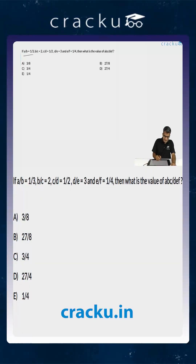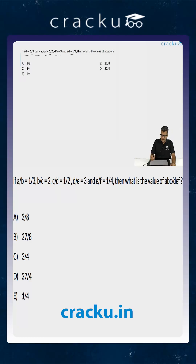In this question, we are told that A by B is 1 by 3, B by C is 2, C by D is 1 by 2, D by E is 3, and E by F is 1 by 4. We are asked to calculate the value of A, B, C divided by D, E, F.